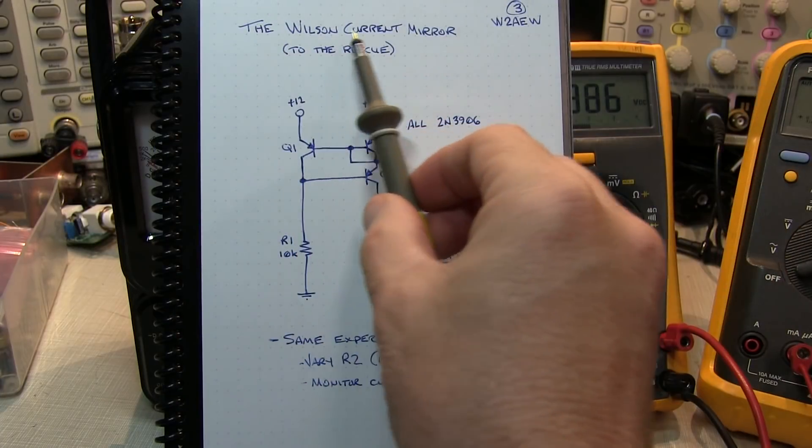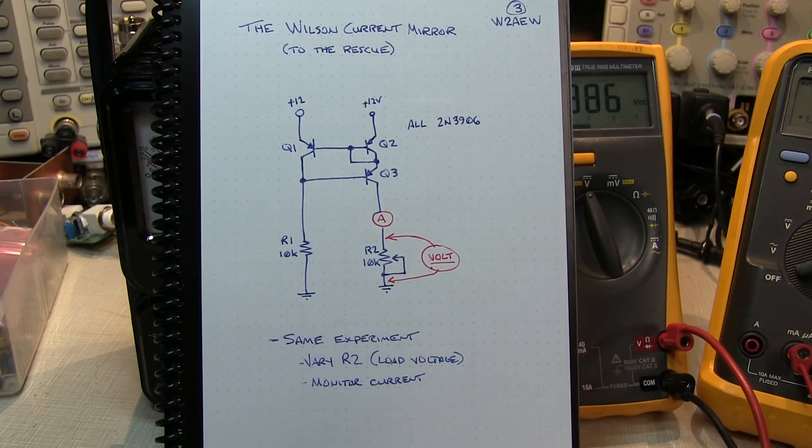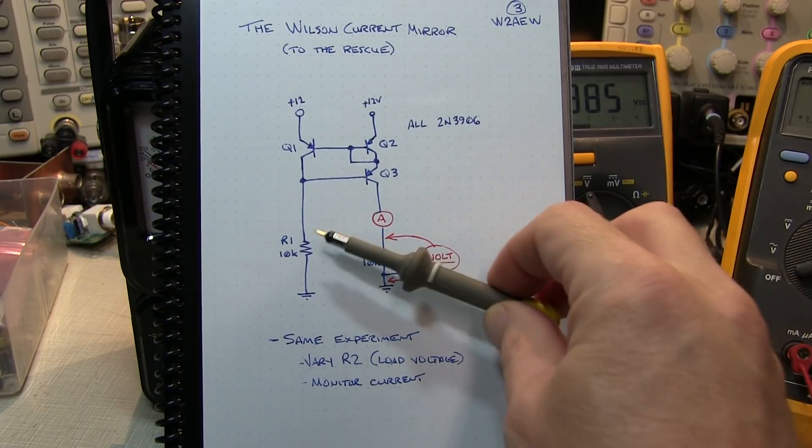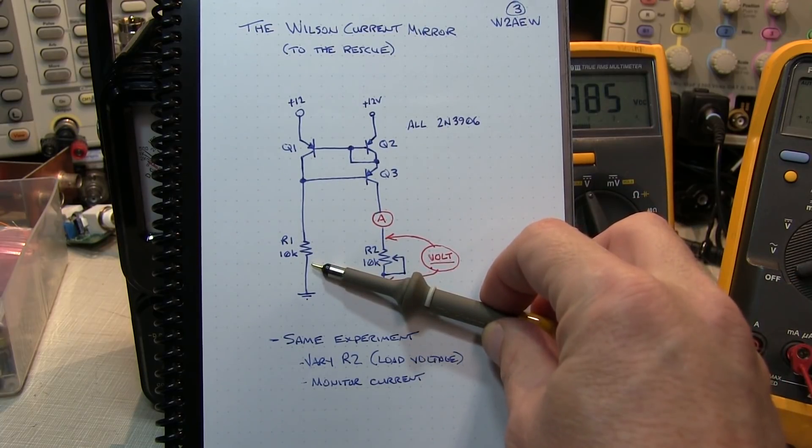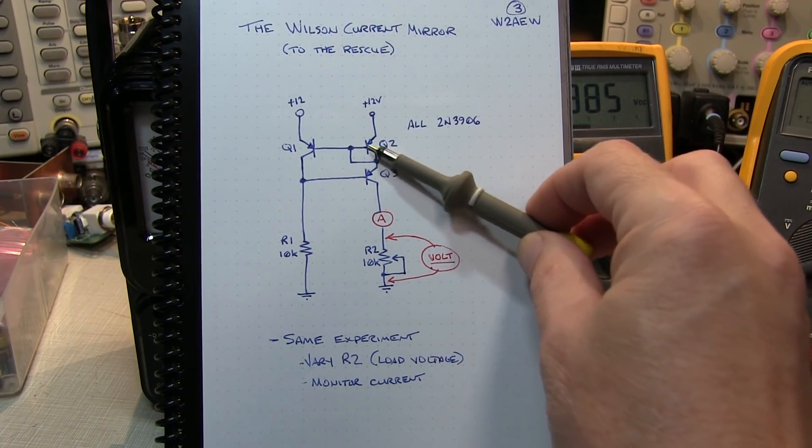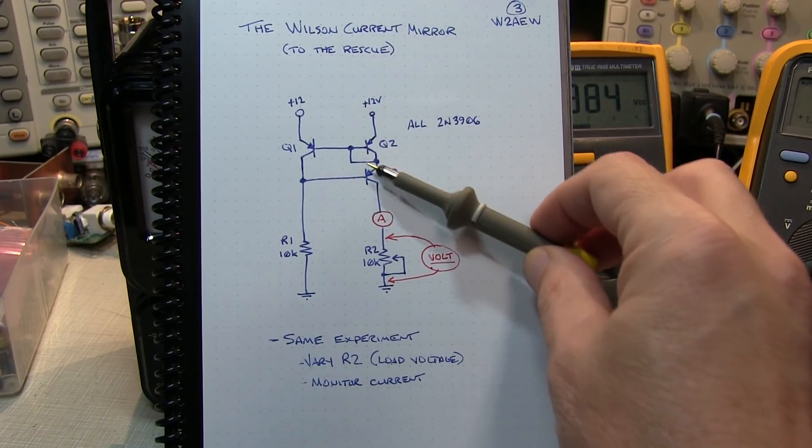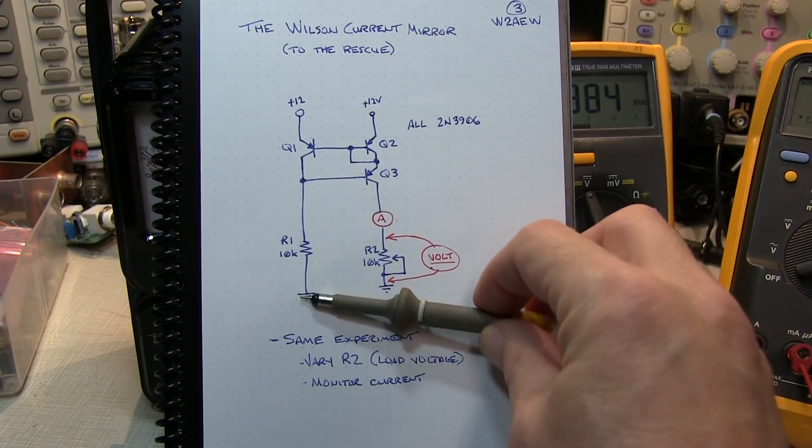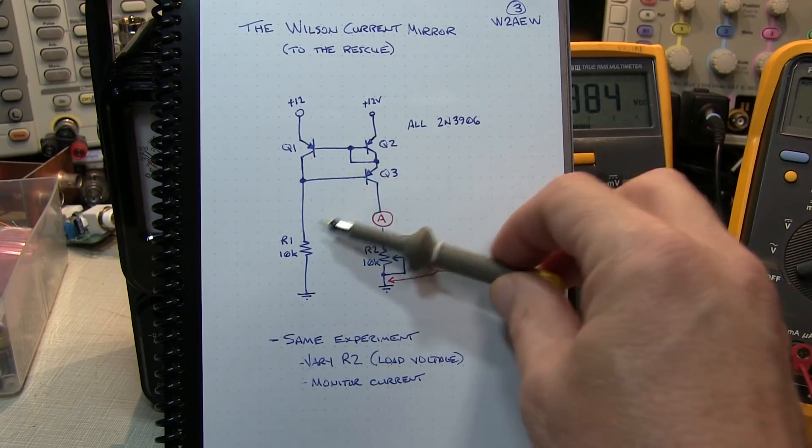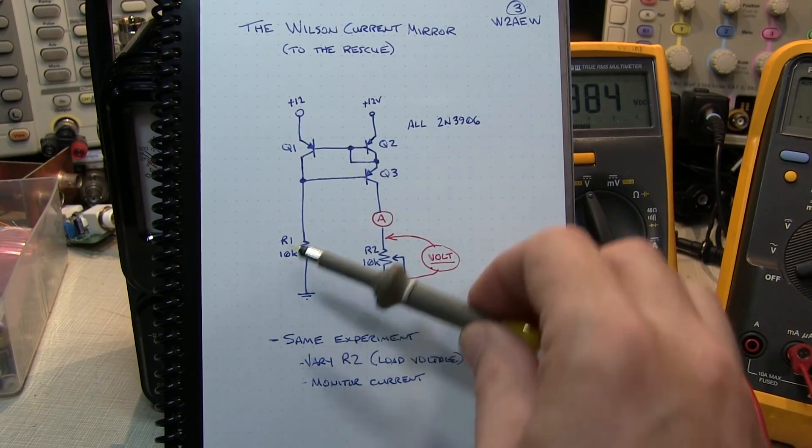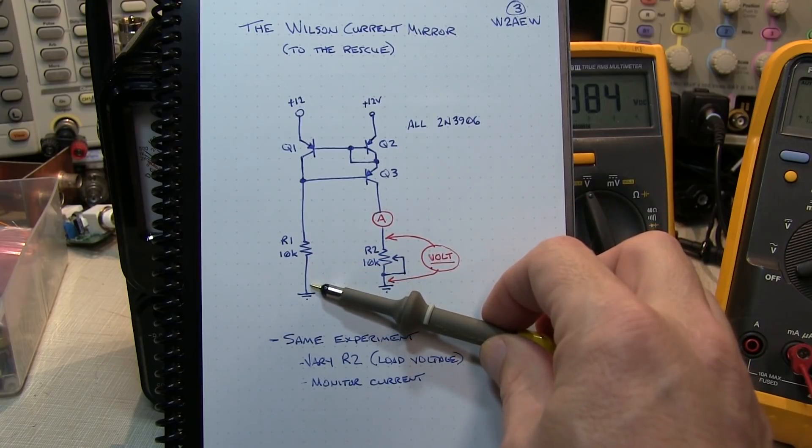Let's take a look at how the Wilson current mirror operates and how it minimizes the effect of the output impedance of the transistors. First, let's take a look at the voltage across R1. So R1 is really going to be 12 volts minus 2 VBE drops. And these are essentially constant. So therefore, I've got a constant voltage of 12 volts minus 2 VBE across R1. So that sets up a constant current in R1, and that's effectively a constant current going through Q1.